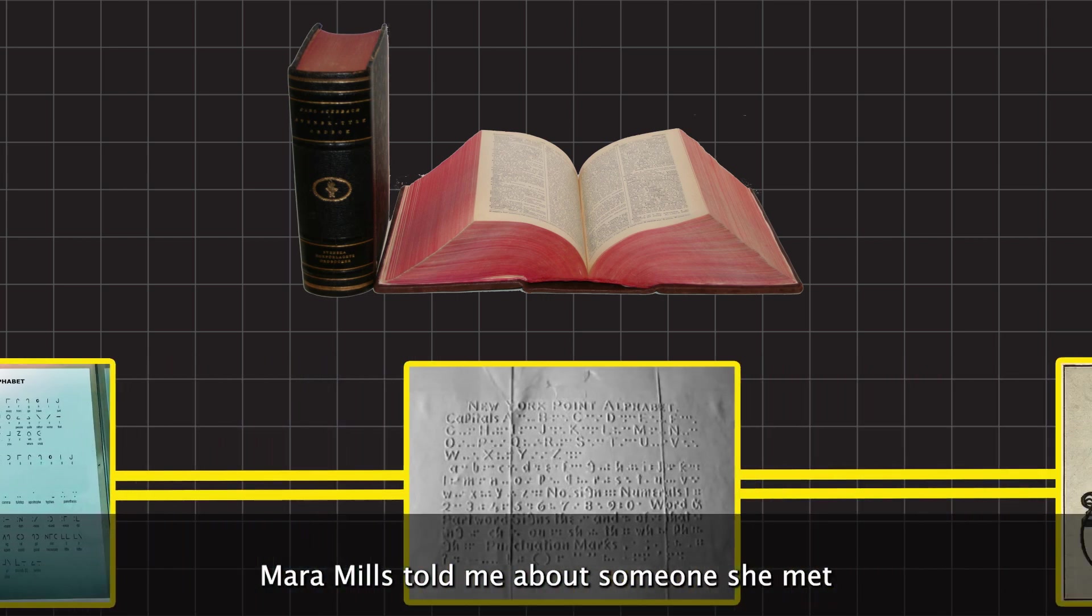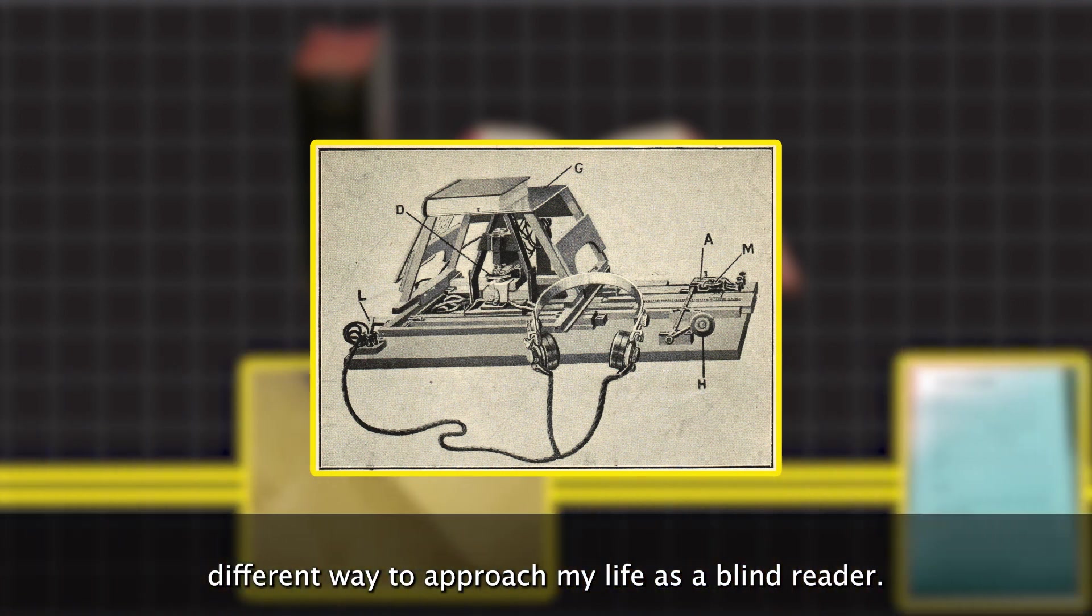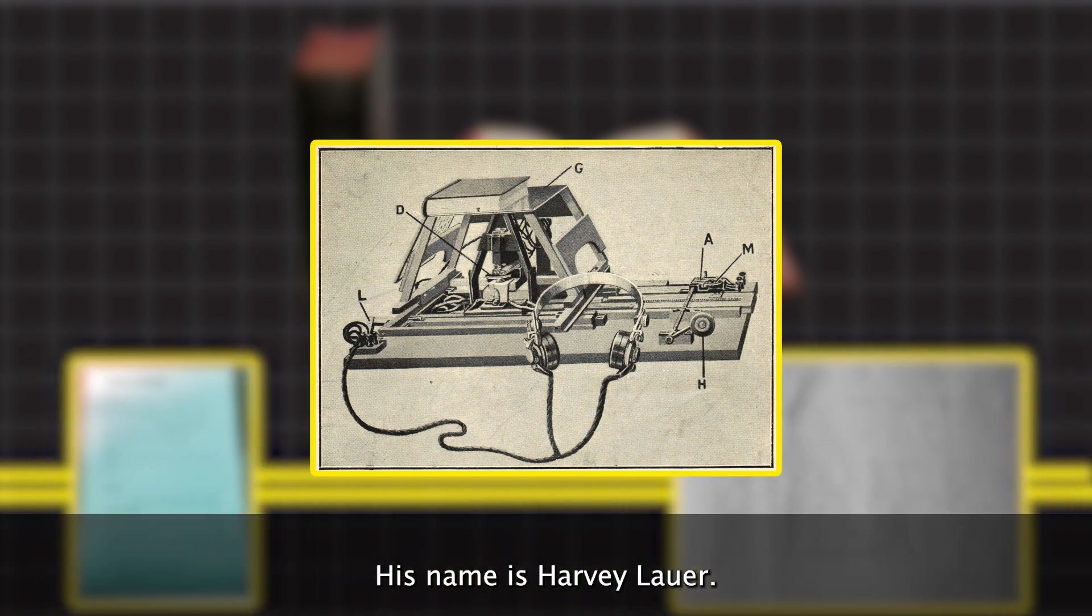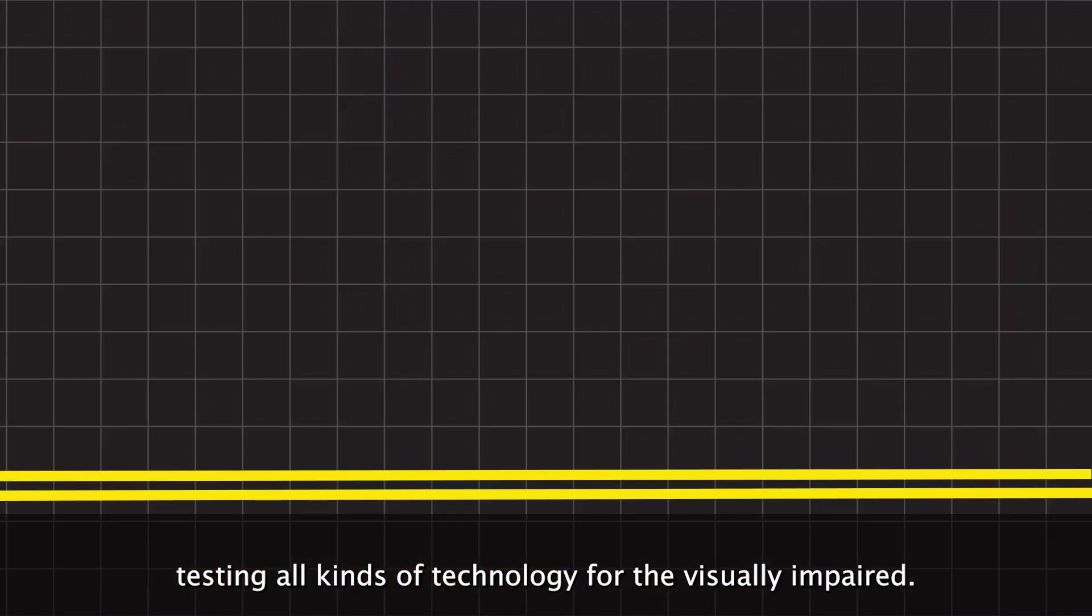Mara Mills told me about someone she met whose story could offer me an example of a different way to approach my life as a blind reader. His name is Harvey Lauer. He's a blind guy who worked at the VA, testing all kinds of technology for the visually impaired.